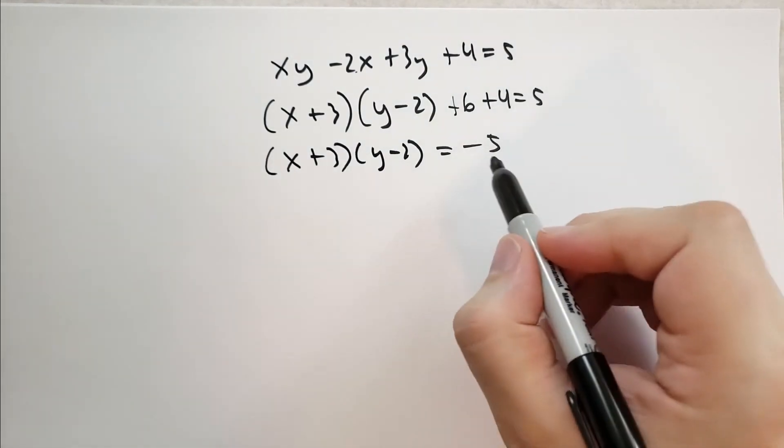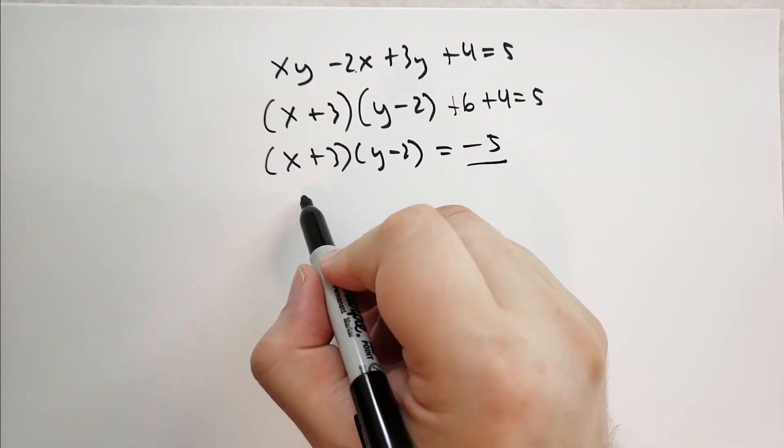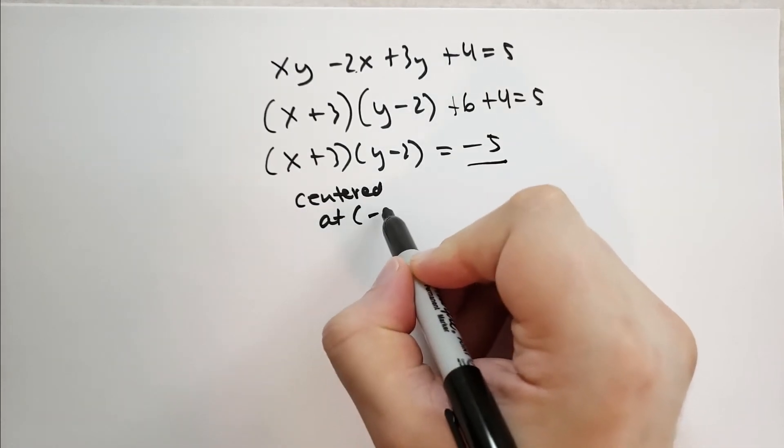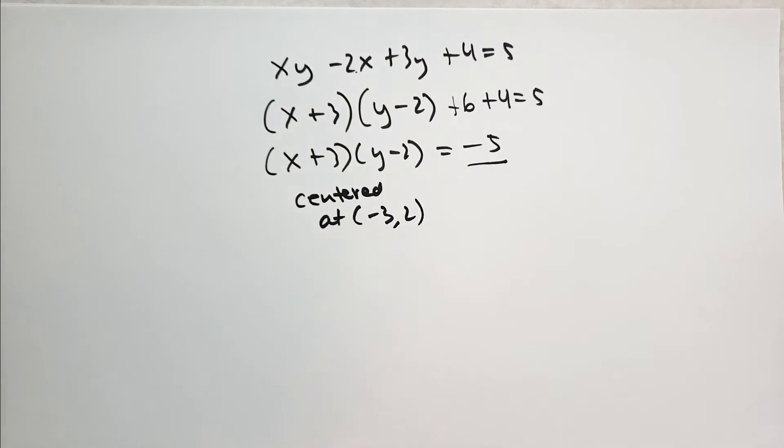Now we have a couple differences here. Now we have a minus 5. We have the centered at minus 3 and 2. So it's centered at minus 3 comma 2. And then we need to figure out what that 5 is going to do. In this case, we would draw a little table to understand that.